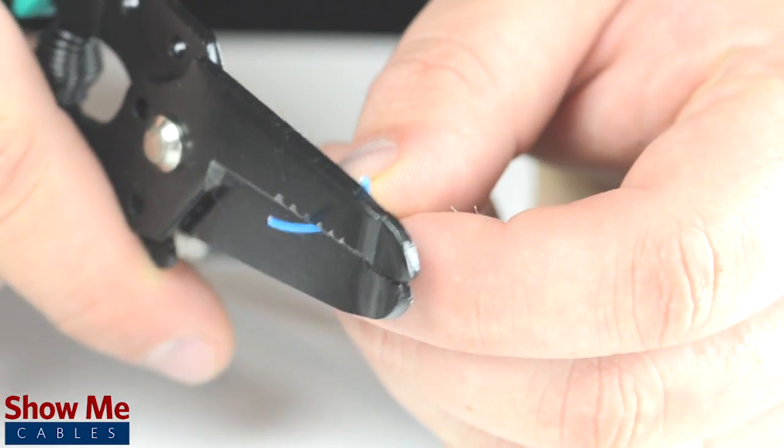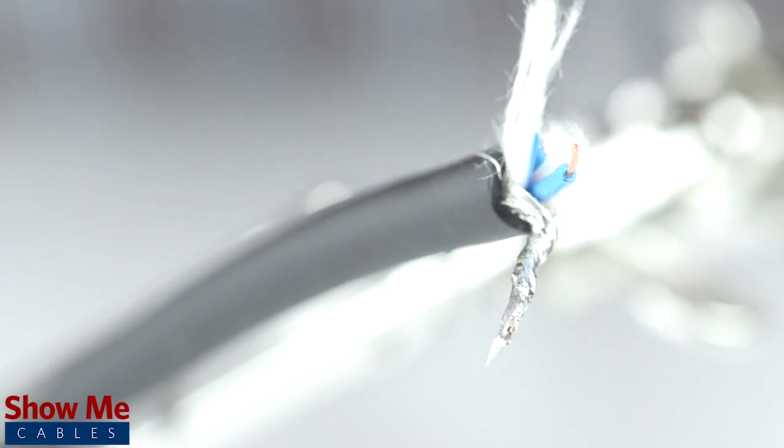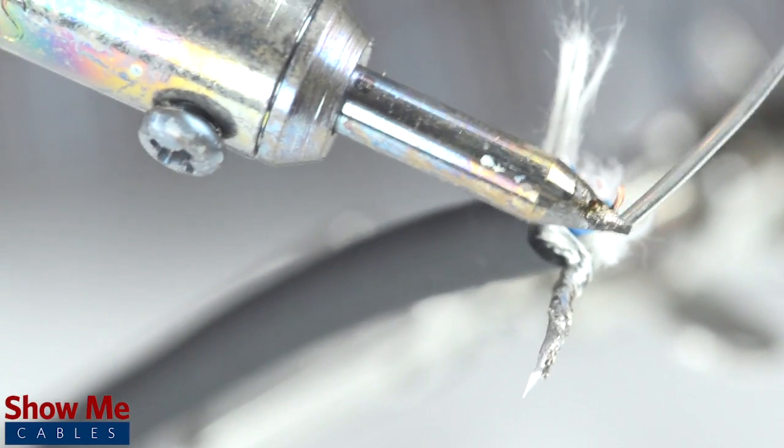Strip the jacket around the center conductor. Tin the center conductor and shield by adding solder to the ends of each wire. Tinning helps make a more lasting and professional bond.